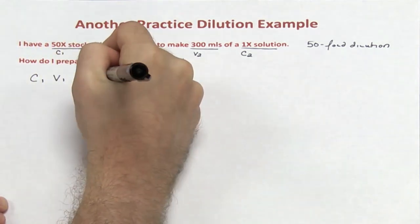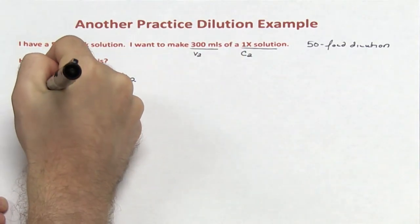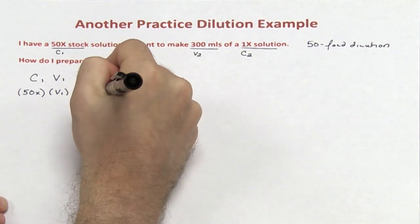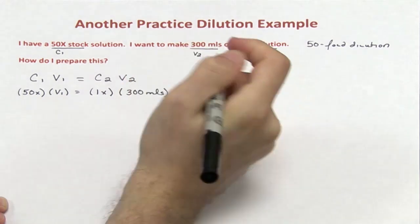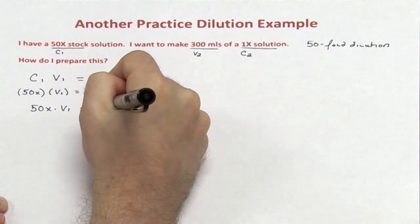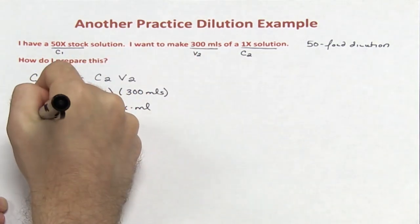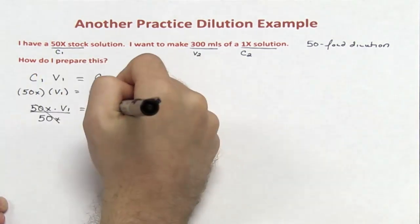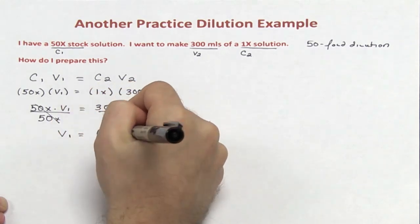Writing out the formula: C1V1 = C2V2. C1 is 50x, V1 is unknown, C2 is 1x, and V2 is 300 mL. So 50x times V1 equals 300x mL. Dividing both sides by 50x, that cancels, and V1 equals 6 mL.